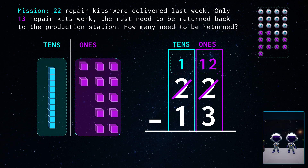Heinz, why don't you take it from here? I'm on it! Let's first subtract the numbers in the ones place. When we subtract three from twelve, we get nine. By looking at the tens place, one minus one is zero.